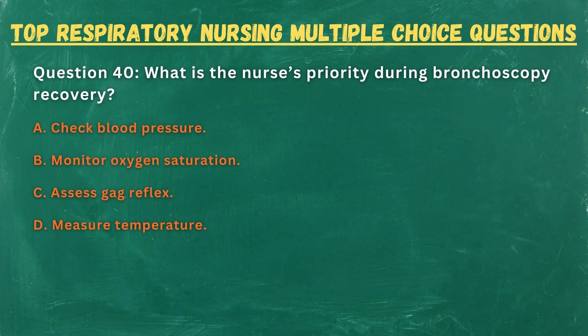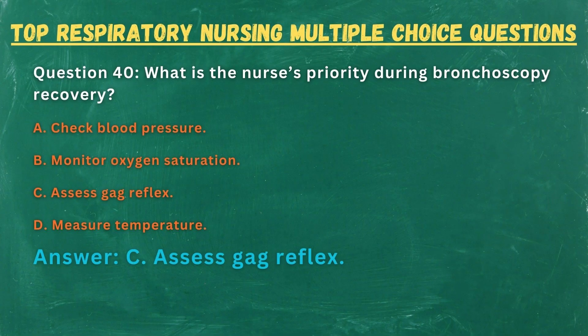Question 40. What is the nurse's priority during bronchoscopy recovery? A. Check blood pressure. B. Monitor oxygen saturation. C. Assess gag reflex. D. Measure temperature. Answer: C. Assess gag reflex.